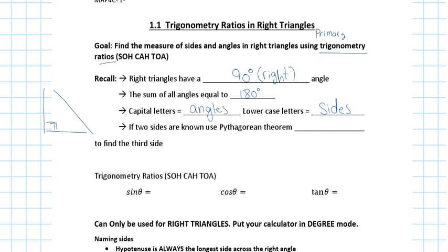In a right angle triangle, if I know two sides, I can use the Pythagorean theorem. If I know two sides and I'm looking for the third, I use A squared plus B squared equals C squared. Anytime in a right angle triangle you know two sides and you're looking for a third, you're going to use the Pythagorean theorem.